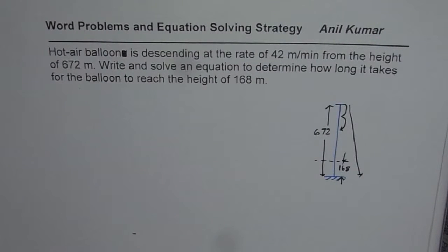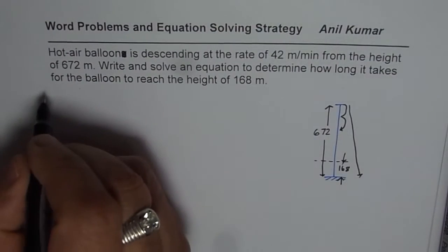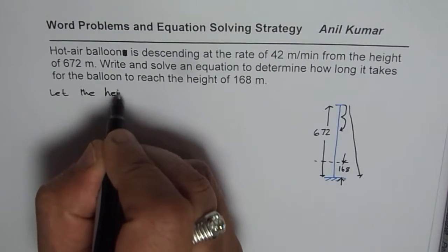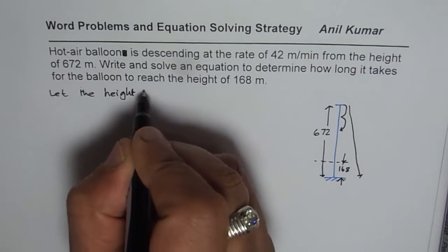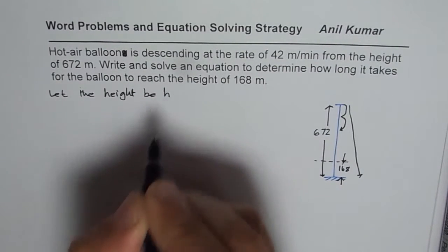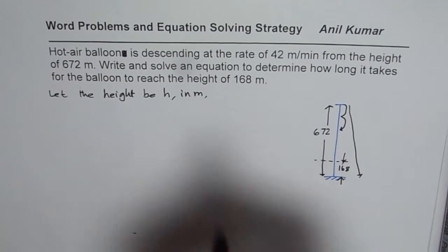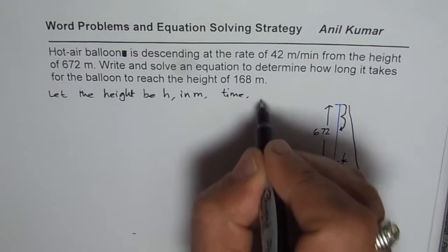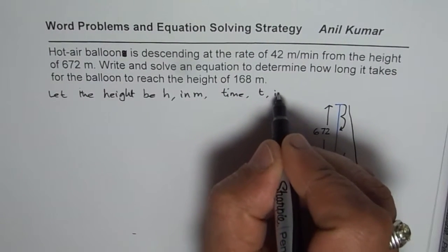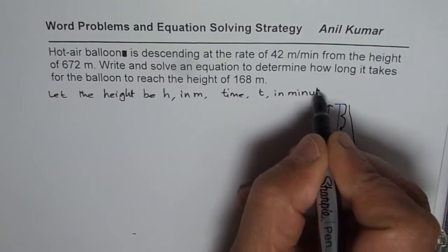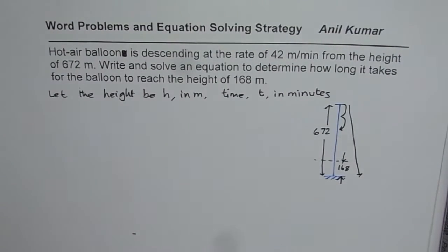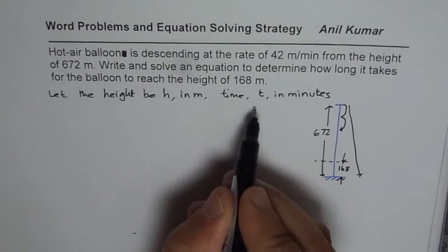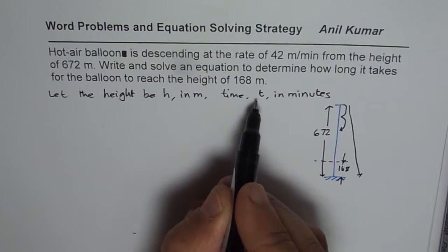The first step is to define the variables. We say: let the height be H in meters, and time be T in minutes. So we will work with these two variables — height in meters and time in minutes.